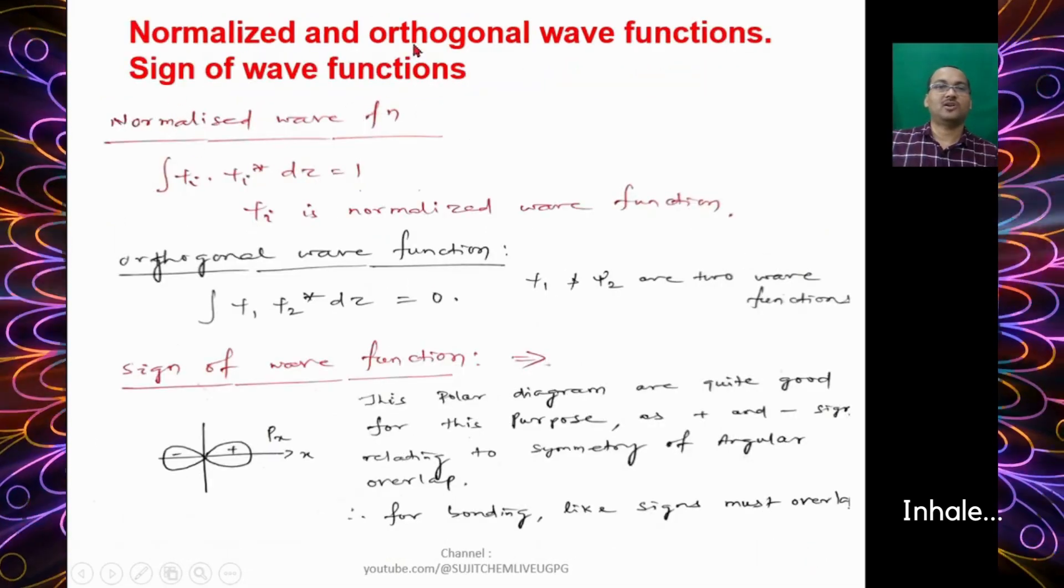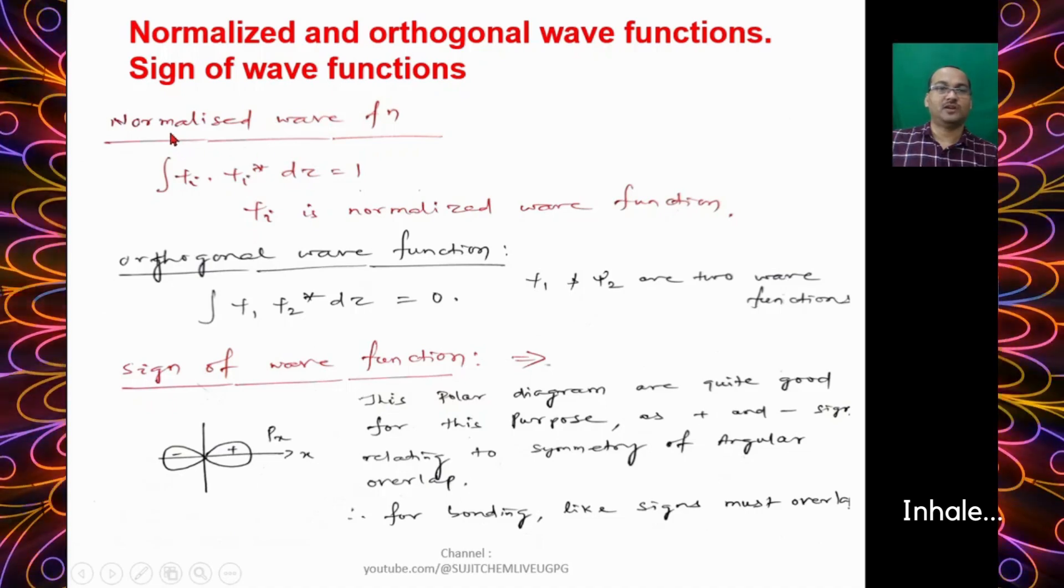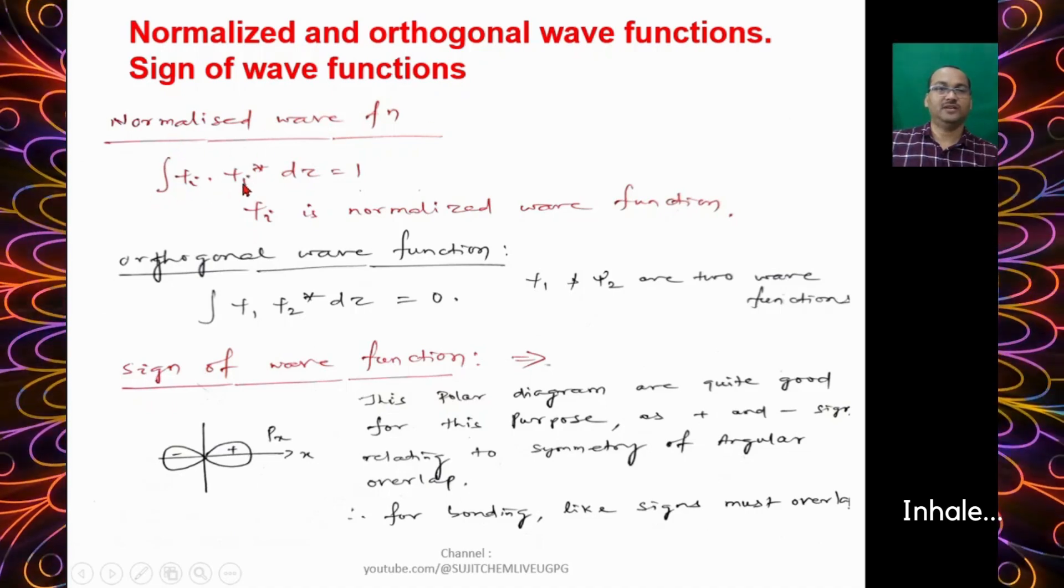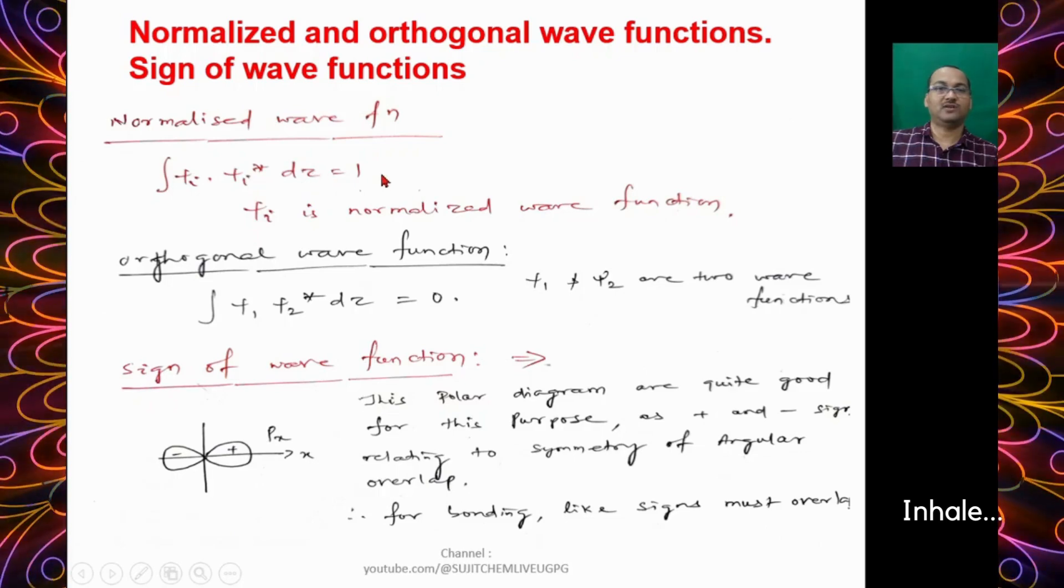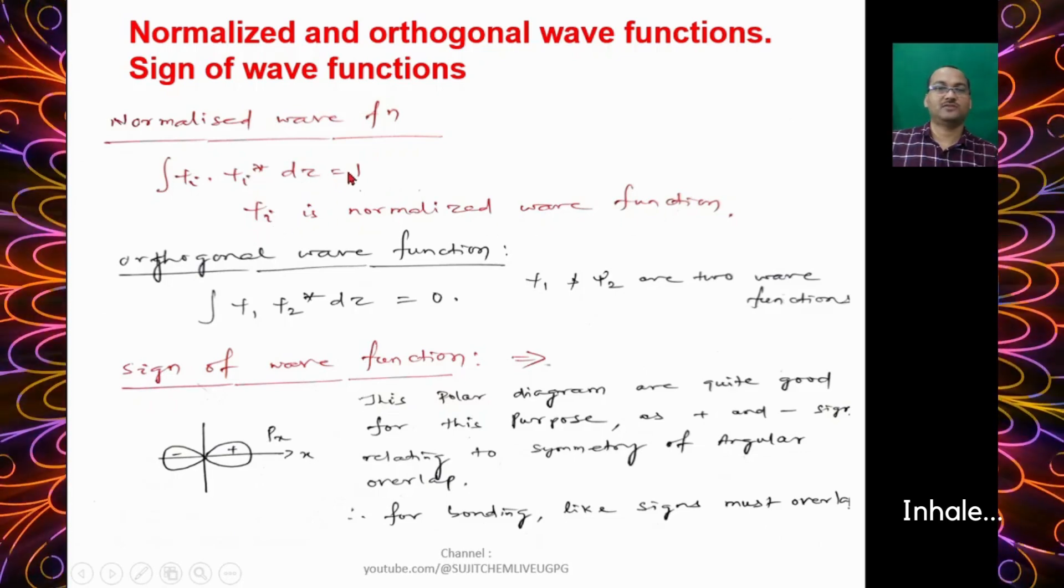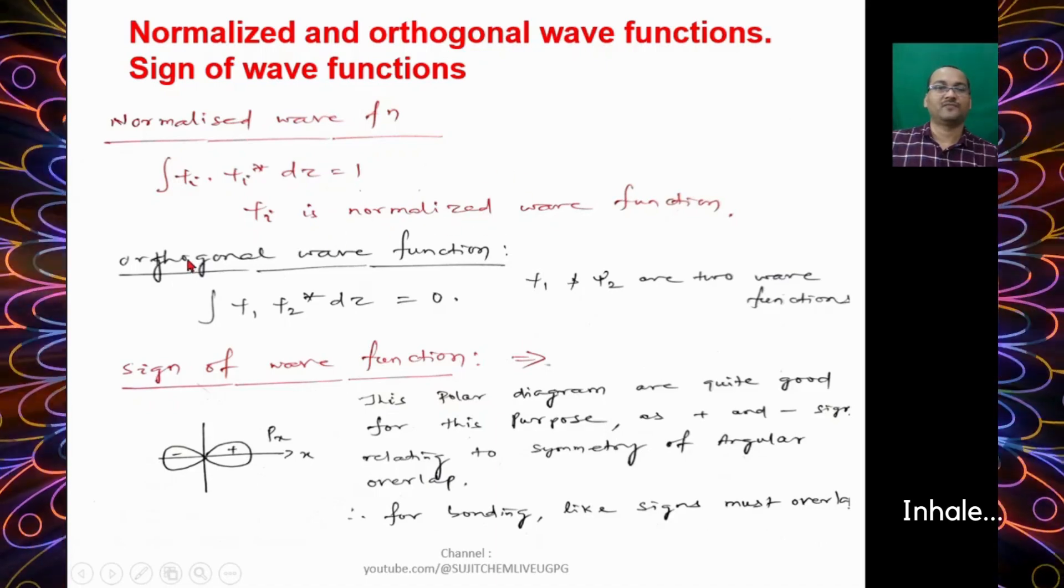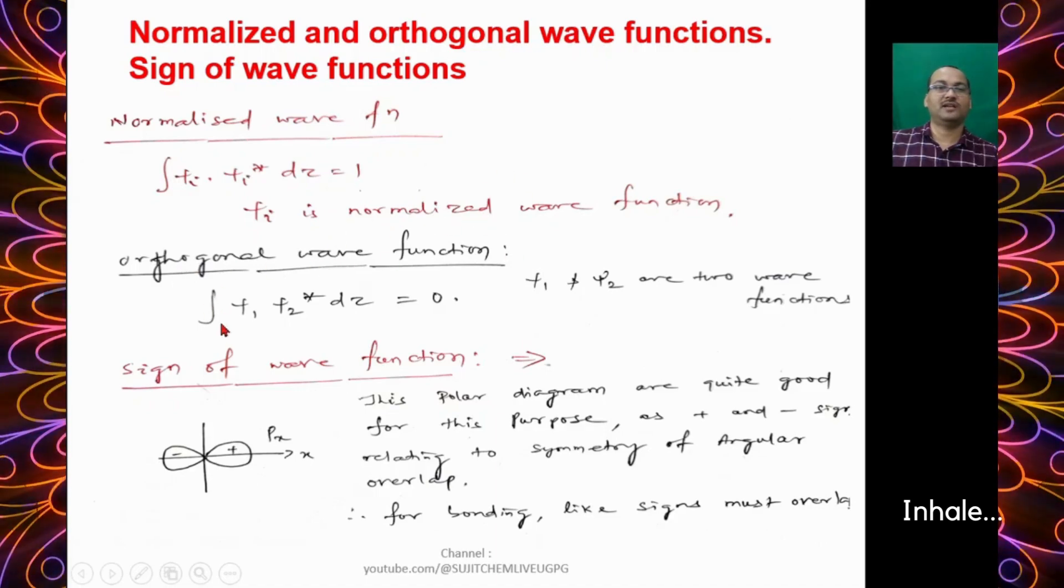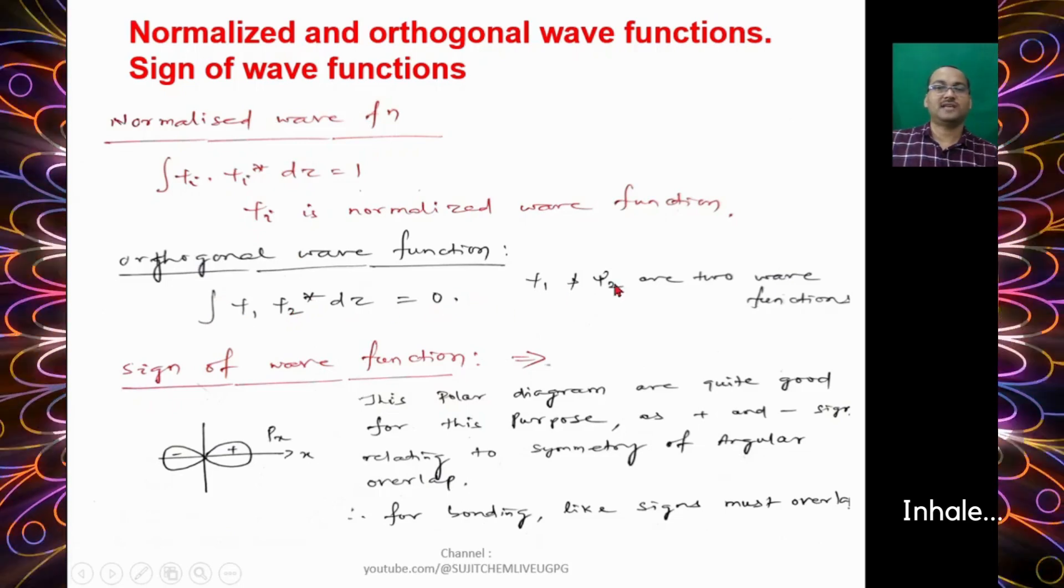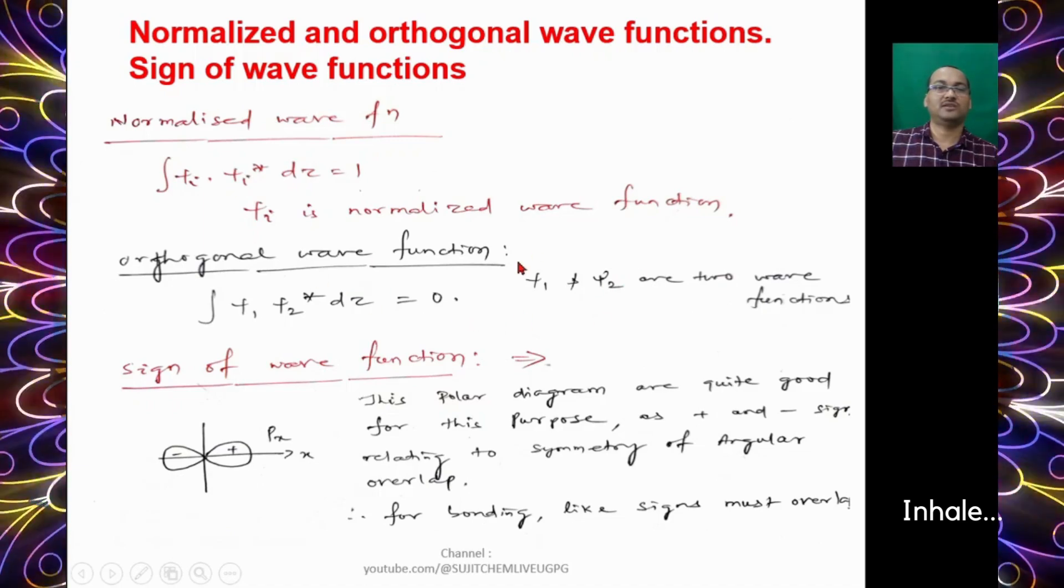Let's talk about the normalized and orthogonal wave functions. For normalized wave function, integration of ψᵢ·ψᵢ* dτ = 1. When this integration value equals 1, that wave function will be normalized. For orthogonal wave function, integration ψ₁·ψ₂* dτ = 0. In that case, ψ₁ and ψ₂ are the two wave functions that have to be orthogonal to each other.